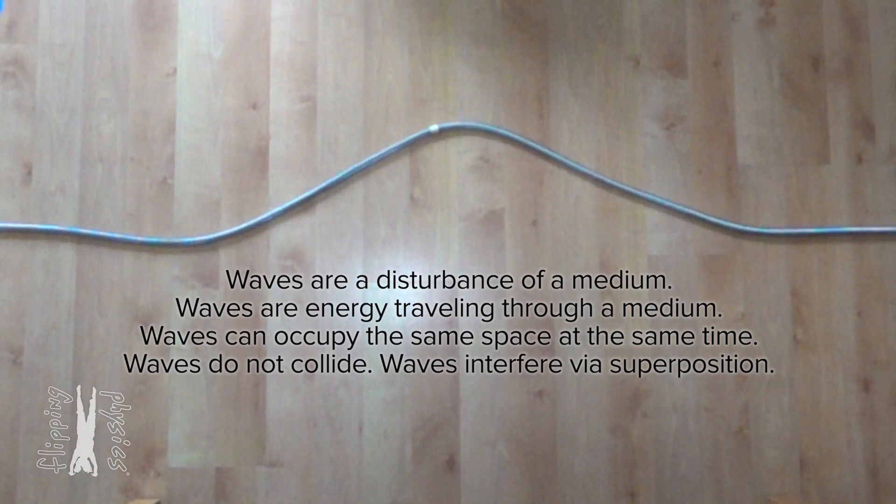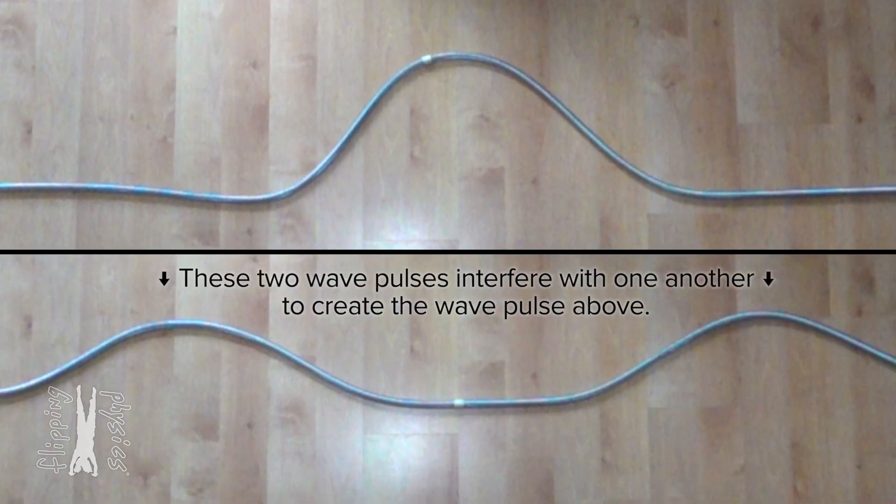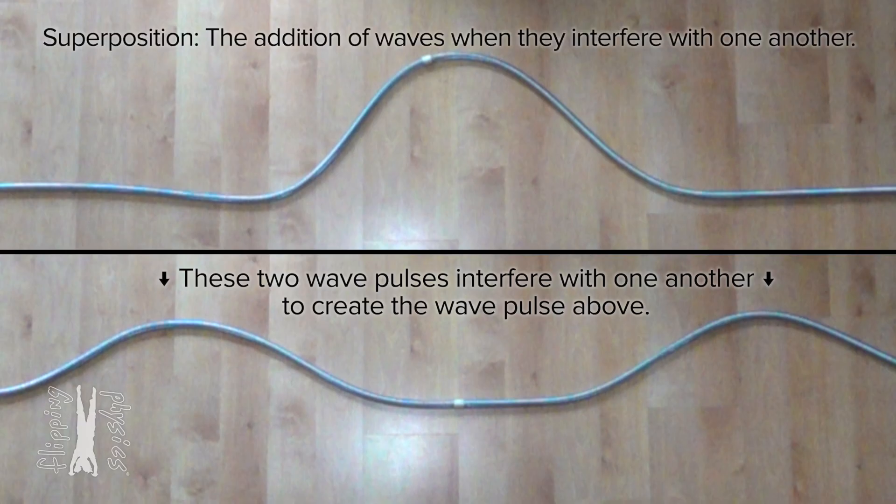The resulting wave pulse is the addition of the original two. The general term for this interference of the two waves with one another is called superposition. Superposition is the addition of waves when the waves interfere with one another. Got it. The specific example shown here is called constructive interference because the two waves add up to a larger amplitude wave.